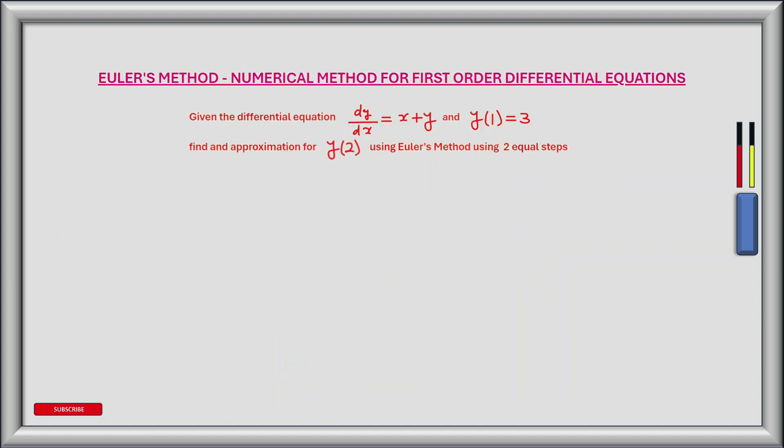Now let's look at a real example of how we can apply Euler's method. Given that we have a differential equation of dy/dx equals x plus y, and the value of y equals 3 at the point x equals 1, we'd like to find the approximation for y at the point x equals 2 using Euler's method using two equal steps.